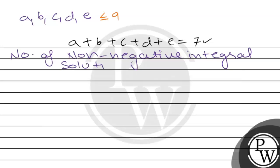Using the formula, this equals 7 plus 5 minus 1, choose 5 minus 1, which is 11 choose 4.